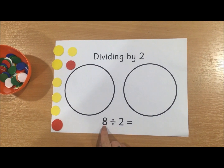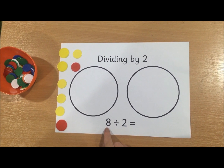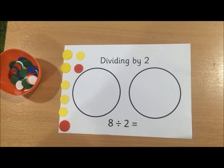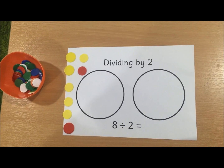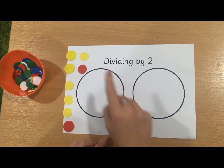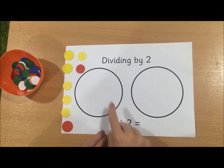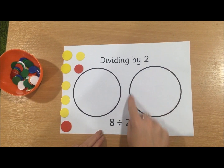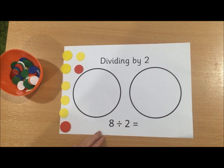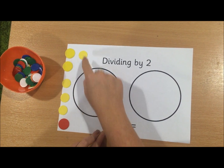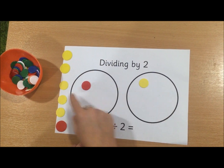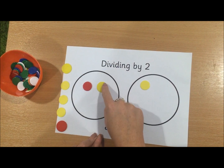Once we've used our careful counting, we've got eight counters — we've made the first number. We then have to share it out equally by two, and I've got my two circles here to help me.